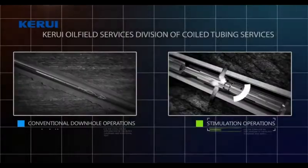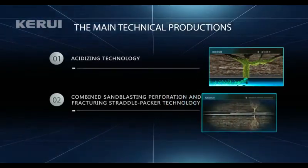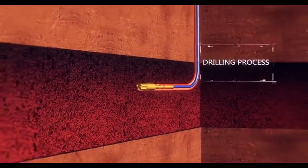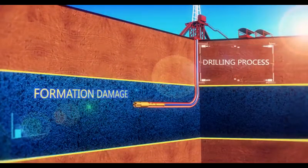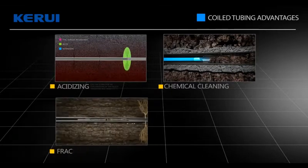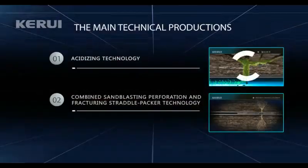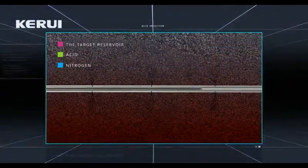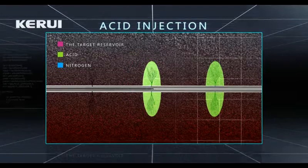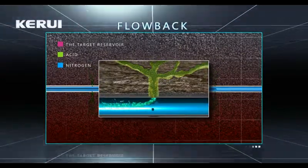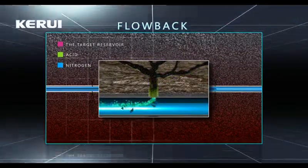Stimulation operations — acidizing technology combined with perforation and fracturing straddle packer technology. Formation damage during oil and gas well drilling, completion, and production can seriously restrict production capacity. Acidizing, chemical cleaning, and fracturing using coiled tubing and targeted treatment reduce formation damage. Formation acidizing technology works directly in production wells without needing to kill the well. Nitrogen is injected directly after operation to flow back rapidly and resume production, accomplishing scale clean-out and declogging at the same time.